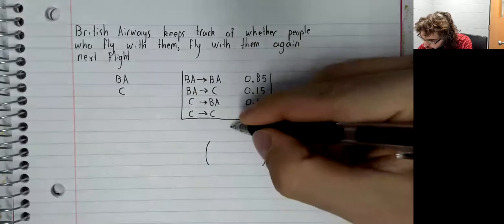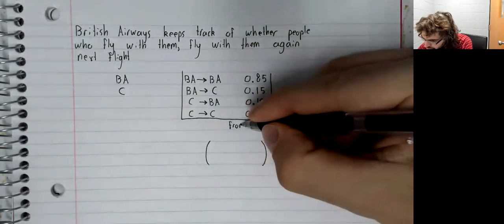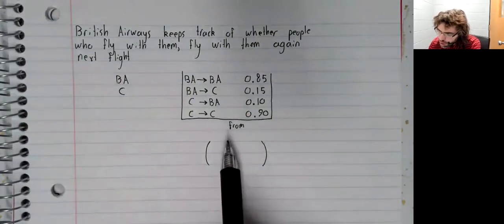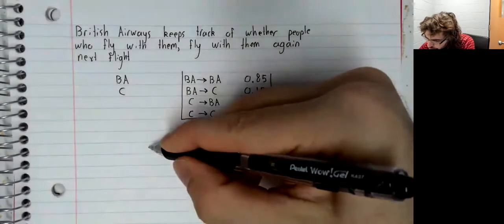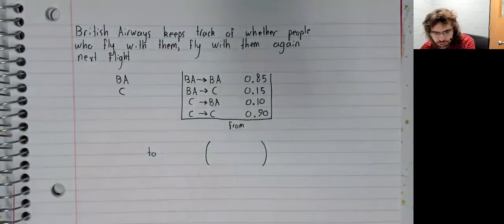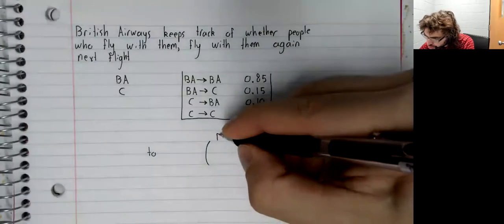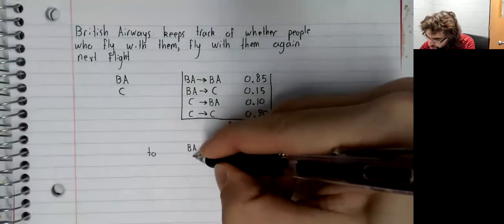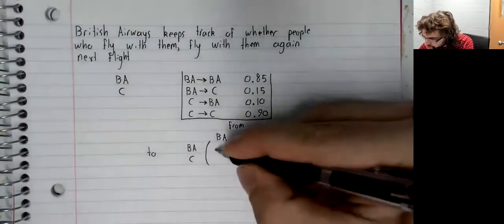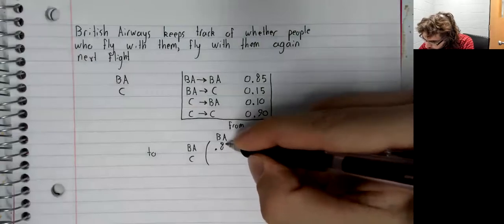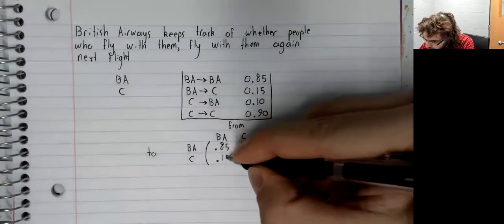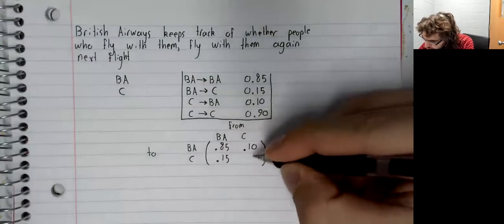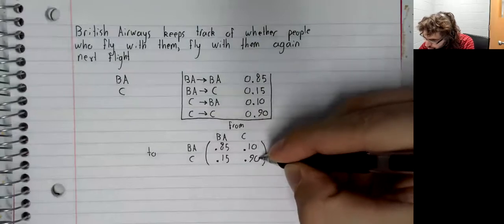So remember that the columns of the transition matrix are where we're coming from, the rows are where we're transitioning to. Here are our states, and here are our transition probabilities.